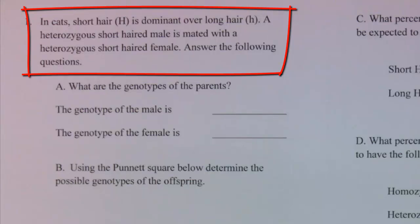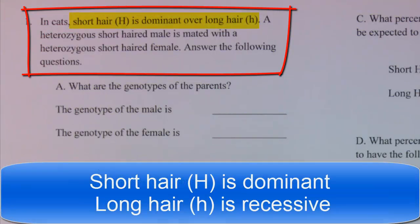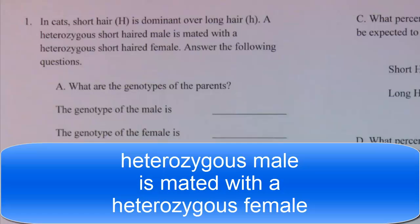We're going to look at short hair and long hair in cats. In this example, short hair is dominant and is represented by a capital H over long hair which is recessive and is represented by a lowercase h. In this cross, a heterozygous short-haired male is mated with a heterozygous short-haired female.